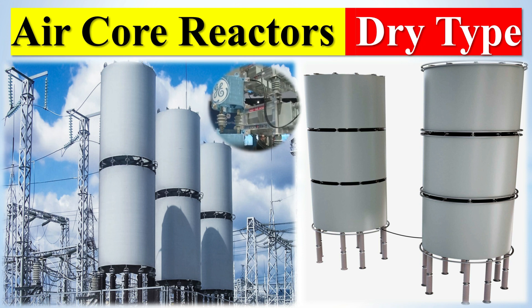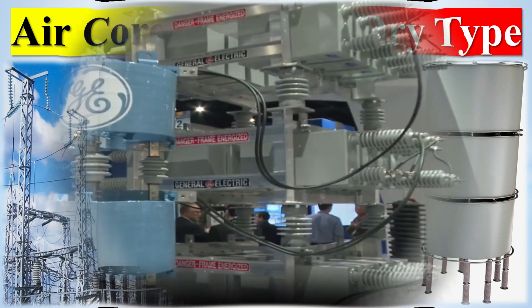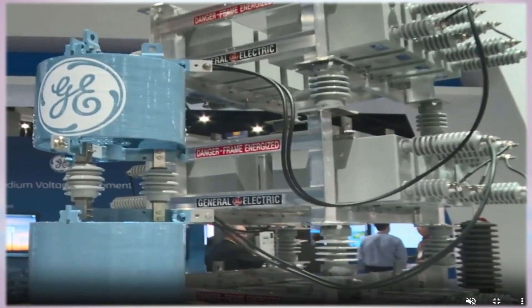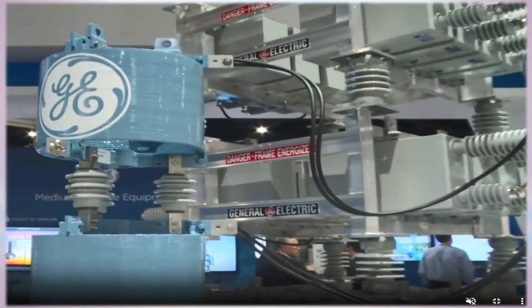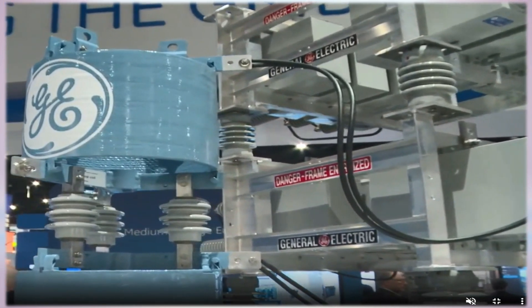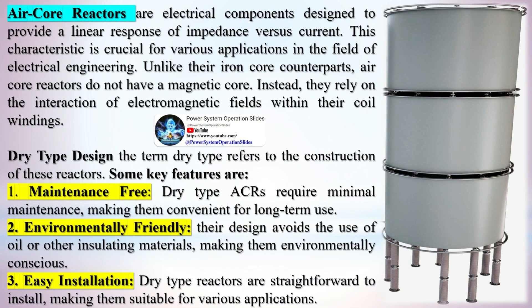Air core reactors are electrical components designed to provide a linear response of impedance versus current. This characteristic is crucial for various applications in the field of electrical engineering. Unlike their iron core counterparts, air core reactors do not have a magnetic core. Instead, they rely on the interaction of electromagnetic fields within their coil windings.